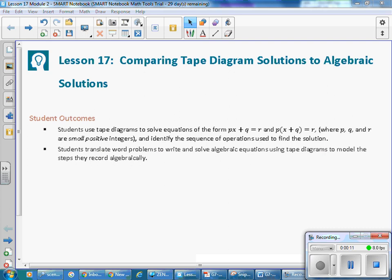Student Outcomes for this lesson. Students use tape diagrams to solve equations in the form of px plus q equals r and p times the quantity x plus q equals r, where p, q, and r are all small positive integers, and identify the sequence of operations used to find the solution. Students translate word problems to write and solve algebraic equations using tape diagrams to model the steps they record algebraically.